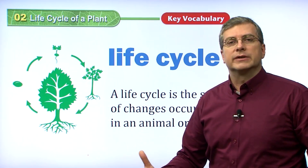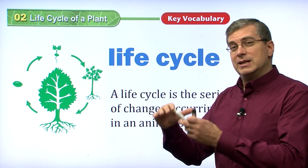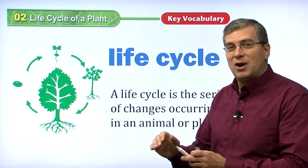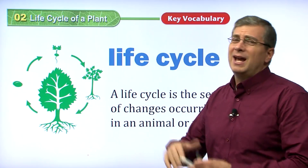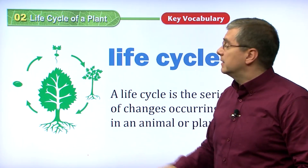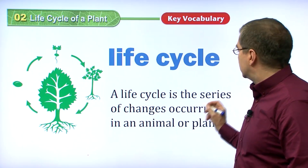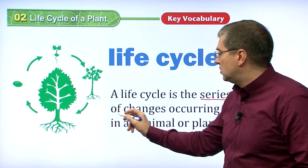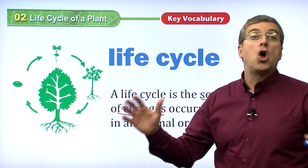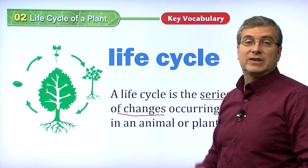Life all around us is going through this cycle. We can see examples of babies, teenagers, things in the middle part of a life, and then things that die. This is all part of the life cycle. It's the series of changes occurring in an animal or plant. All life goes through a series of changes in the life cycle.